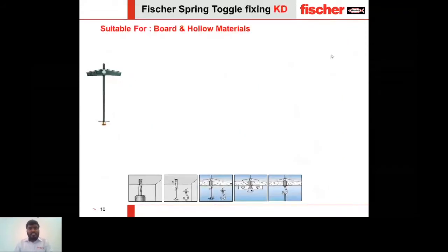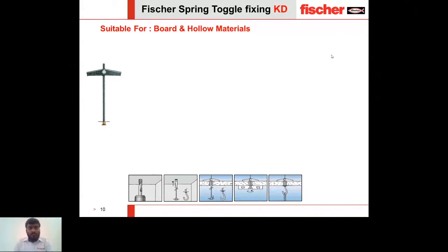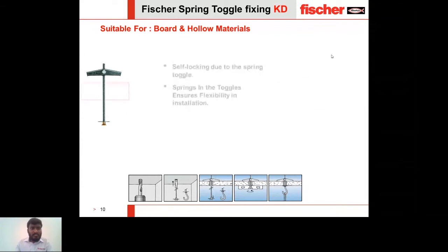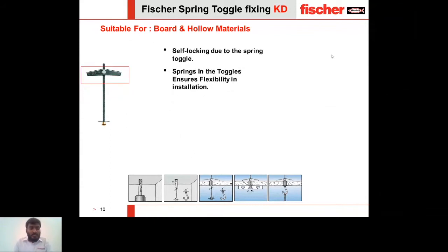Let's move on to our first anchor: Fischer Spring Toggle Fixing KD. This anchor is suitable for board and hollow materials. Board materials are typically gypsum boards or wooden panels, and hollow materials are hollow blocks or hollow slabs. You can see the highlighted portion of the anchor — it comes with wide toggles or wings with an inbuilt spring, which ensures flexibility in installations. These wings expand automatically during installation.